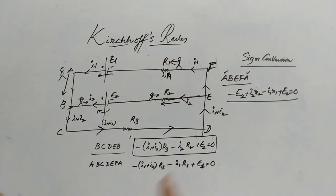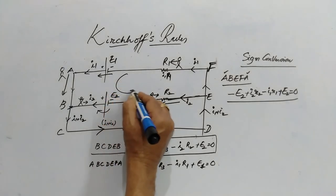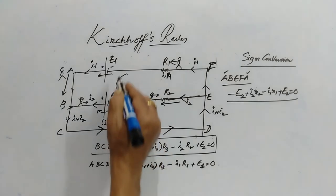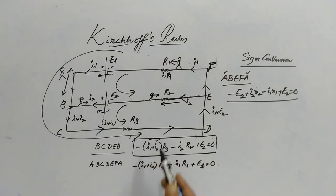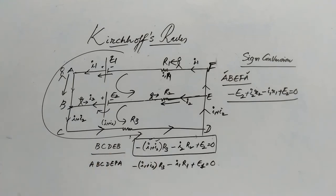So in these problems, if there are two unknowns then you must have minimum two equations; if there are three unknowns then minimum three equations. Here we considered the first loop, the second loop, and the third outer loop. With these three equations you can solve the values of i1 and i2. You should try some numericals, tally the answers, and if you are getting the answers it's fine, otherwise you need to study the law once again.